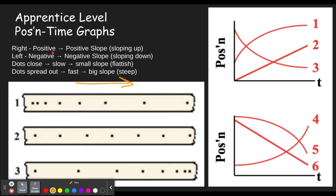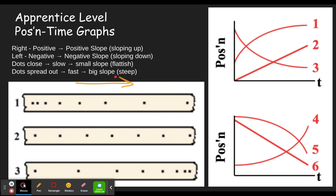If you see that the dots are close together, that means it's moving slowly because it's not getting very far each second, and that's going to be represented by a fairly flat part of the curve. Whereas if the dots are spread out, it's moving fast, which means a steep part of the slope — like the end of five, the end of four, the beginning of one, and the beginning of three.